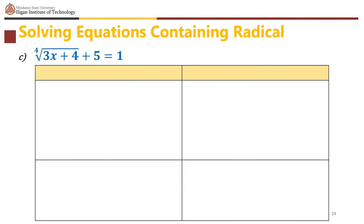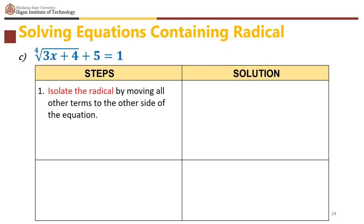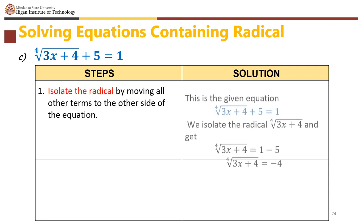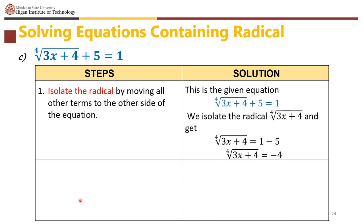For the fourth root of (3x plus 4) plus 5 equals 1: isolate the radical. Moving 5 to the right: fourth root of (3x plus 4) equals 1 minus 5, which is negative 4. The index is 4, so raise both sides to the fourth power.